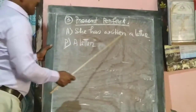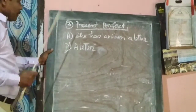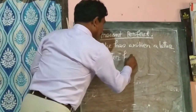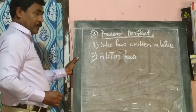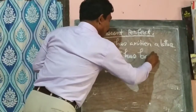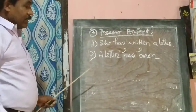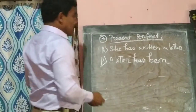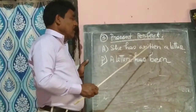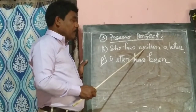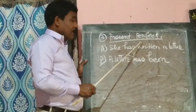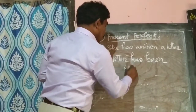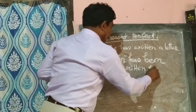If the active is 'She has written a letter,' then in passive voice, the be verb for present perfect is 'have been' or 'has been' plus past participle. So the passive is: 'A letter has been written by C.'